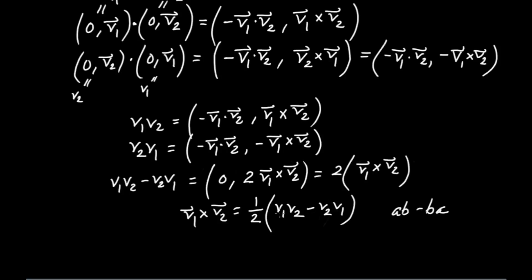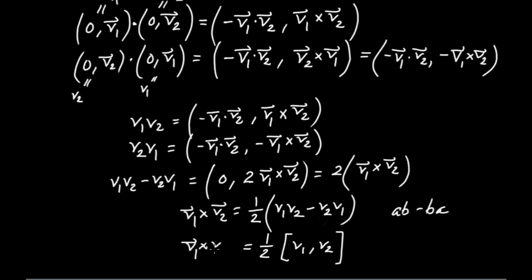So I could rewrite the quantity V1V2 minus V2V1 as the commutator between V1 and V2, designated by these brackets. Keeping the one-half, this is still equal to the cross product V1 cross V2.